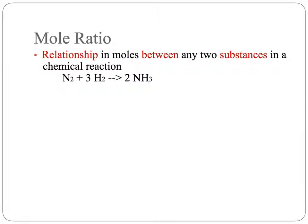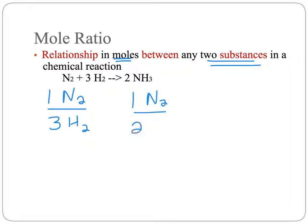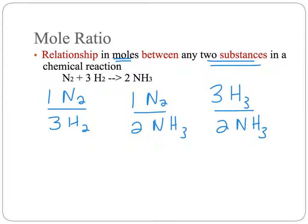The mole ratio is the relationship in moles between any two substances in a chemical reaction. It can be a reactant and a reactant, a reactant and a product, or a product and a product. For example, looking at our ammonia equation, we can see a ratio between one mole of nitrogen and three moles of hydrogen, or one mole of nitrogen and two moles of ammonia, or three moles of hydrogen to two moles of ammonia.